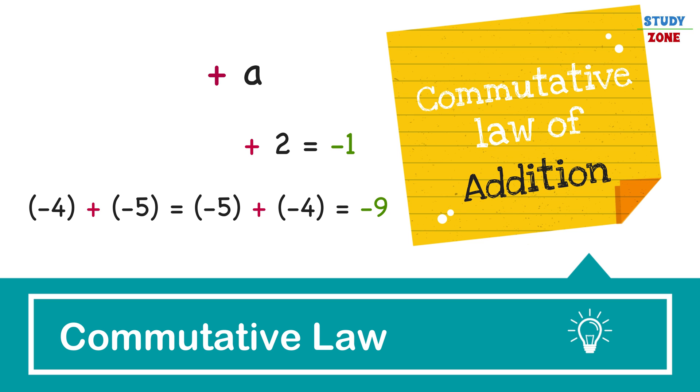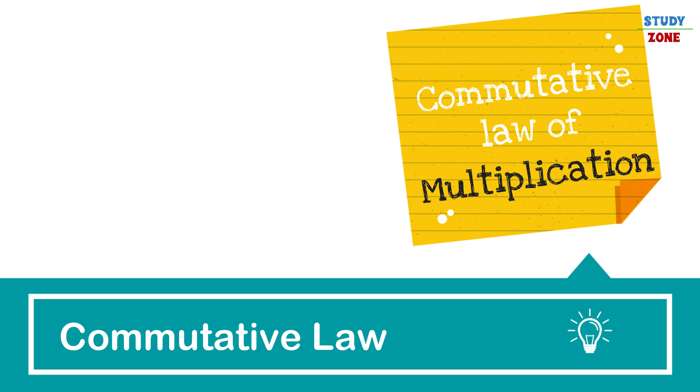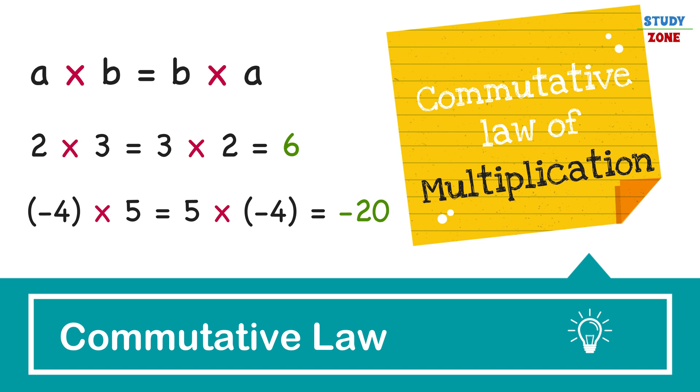Let's now talk about commutative law of multiplication. It states a into b is equal to b into a. For example, 2 into 3 is equal to 3 into 2, both will result in 6. Both the operands can be negative as well and the operands can move either side of the multiply operator. It will not affect the output.